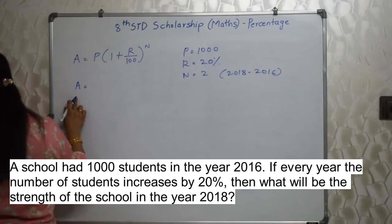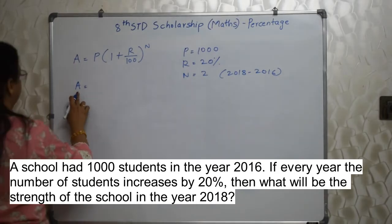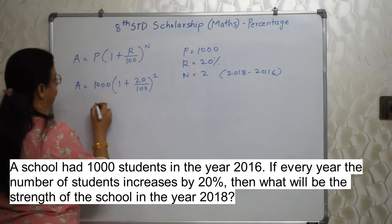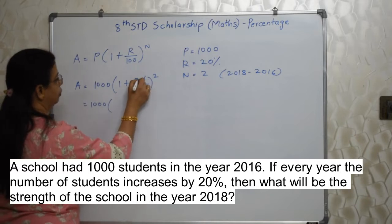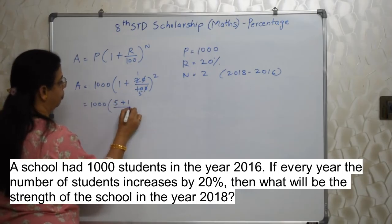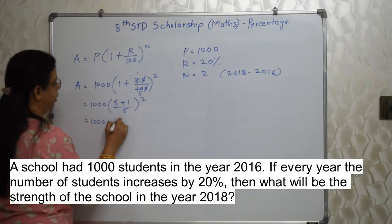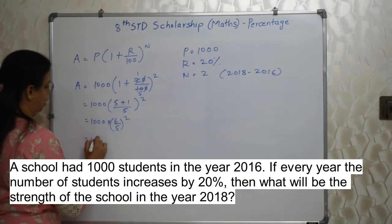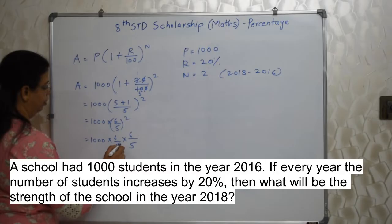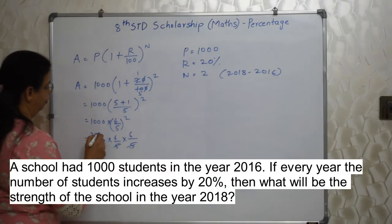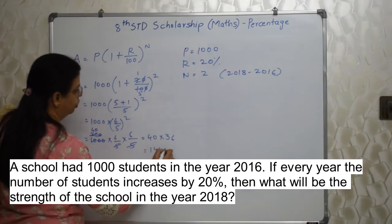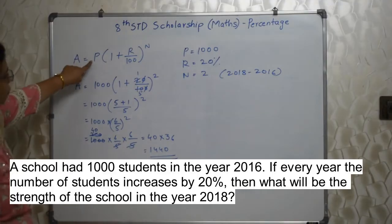A is what we want — the strength of the school in 2018. So A = 1000 × (1 + 20/100)². I can reduce 20/100 to 1/5. Finding LCM as 5, this becomes 1000 × (6/5)². So it is 1000 × 6/5 × 6/5. No need to write 36/25 directly. Calculating: 40 × 36 = 1440 students. Very, very easy — just this one formula and you are done.